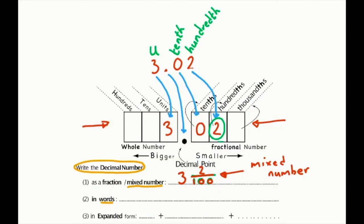The next step will be to write the mixed number in words. So here, I write three and two hundredths.